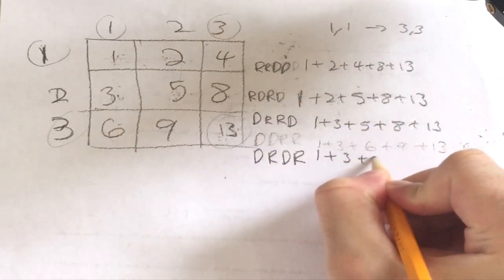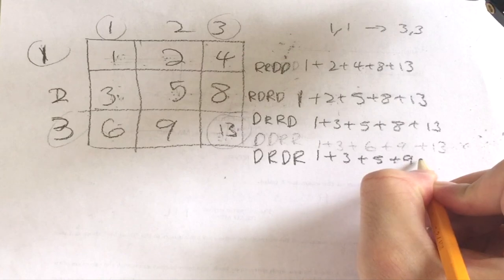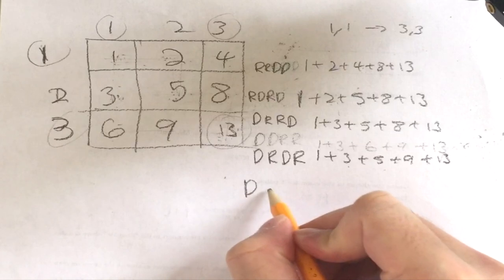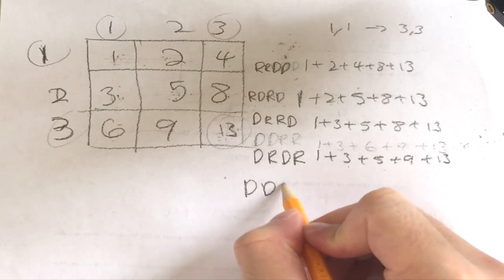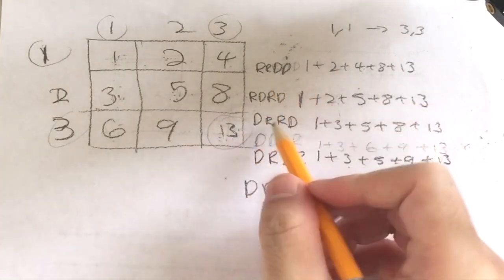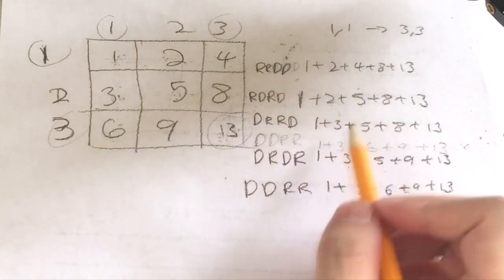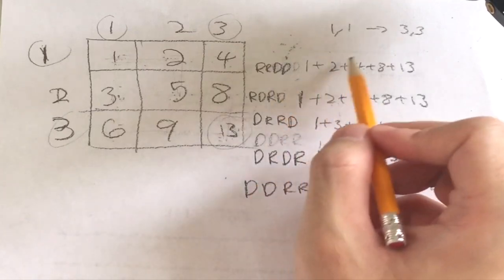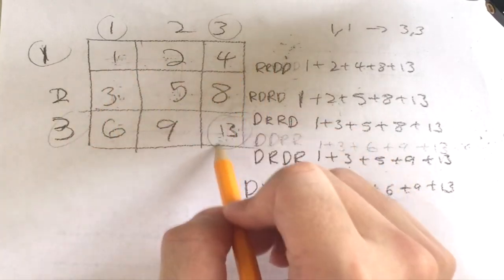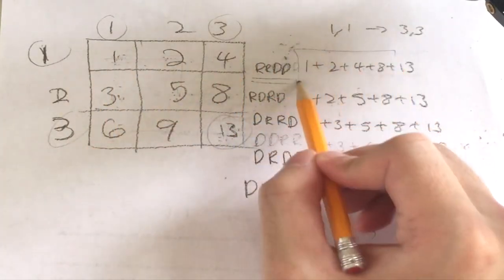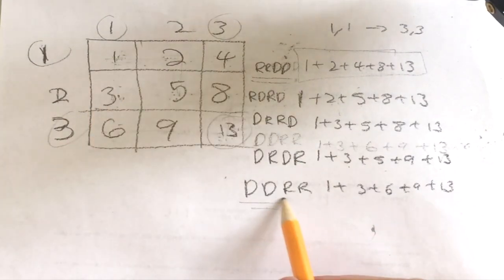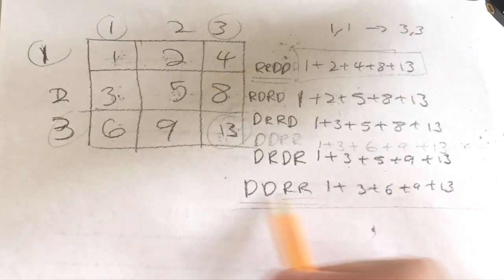So all these paths are just one more than the previous path. The smallest path sum comes from going all rights first and then all downs. The largest path sum comes from going all downs first and then all rights. Every permutation of moves produces a sum exactly one more than the last.